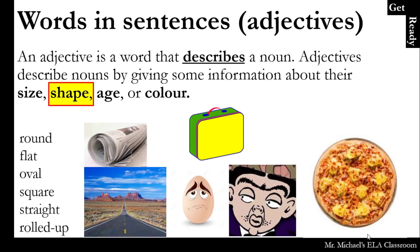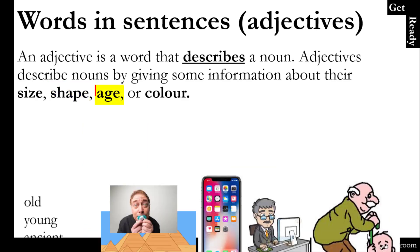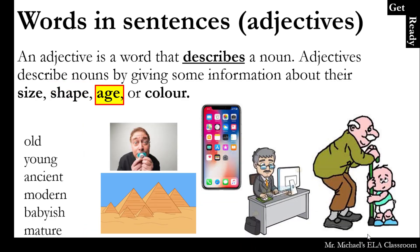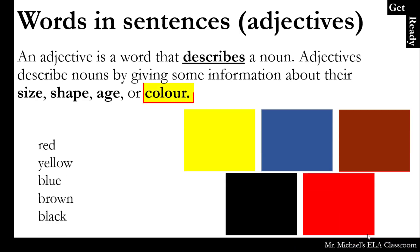Shape could be round, flat, oval, square, straight, or maybe even rolled up. Age: old, young, ancient, modern, babyish, or mature. Or color, which could be red, yellow, blue, brown, black, or any other color.